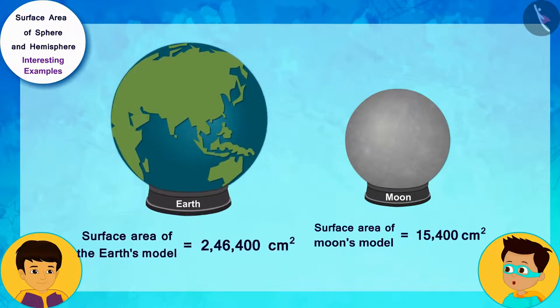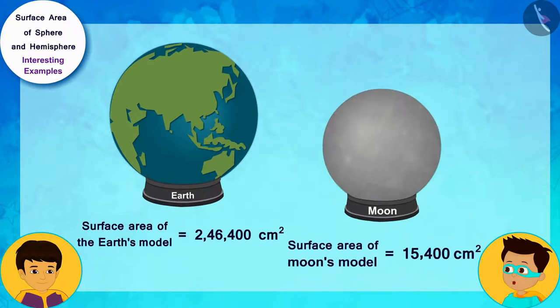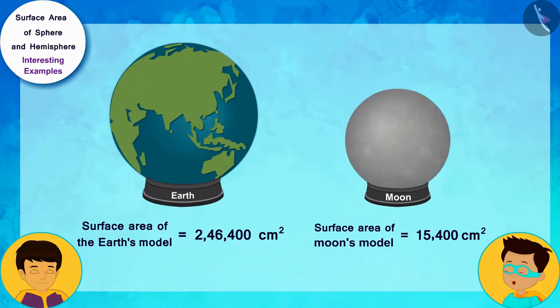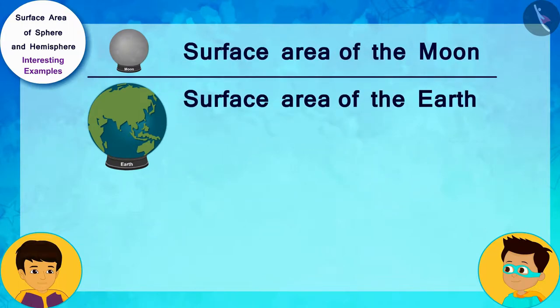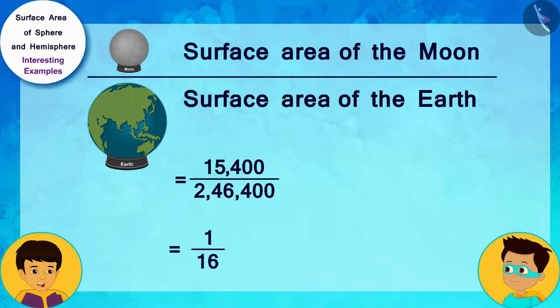The clay used in the model of the earth is many times more than the model of the moon. And do you know another fun fact? If we find the ratio of the clay used in the model of the moon and the clay used in the model of the earth in this way, then you can see that their ratio is 1 by 16. And in fact, the ratio of the surface area of the moon and the earth is also 1 by 16.